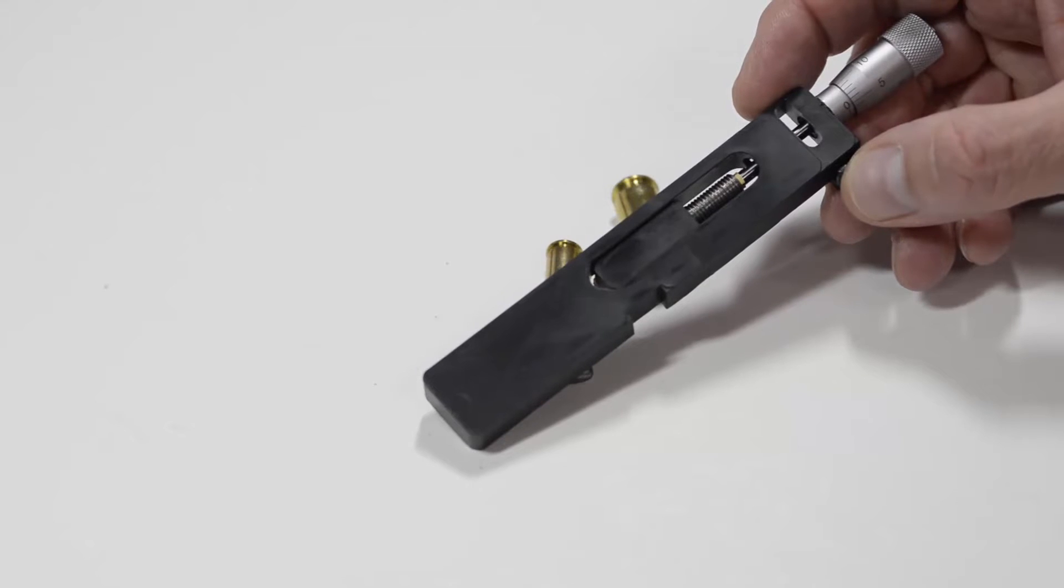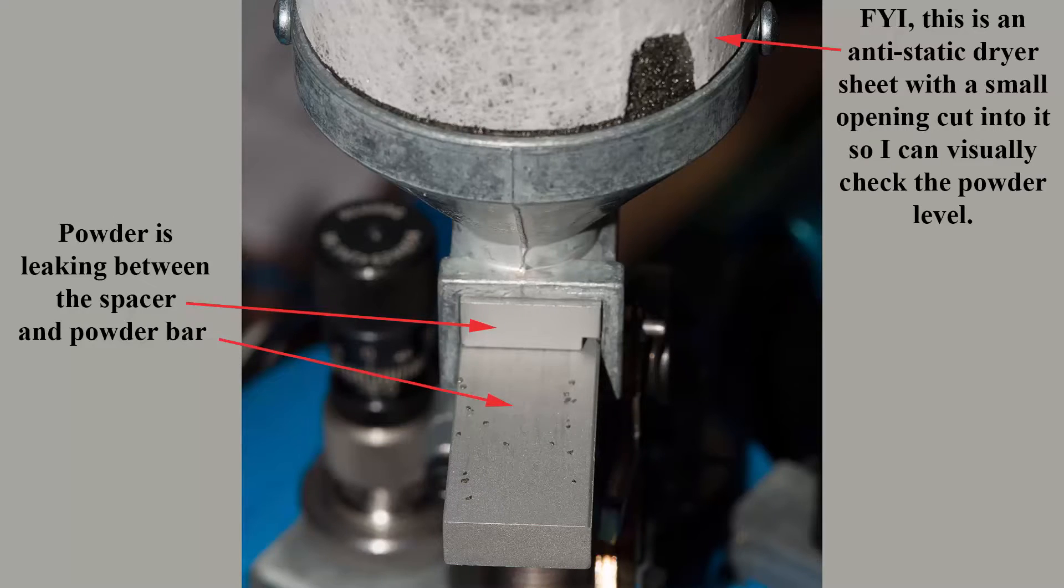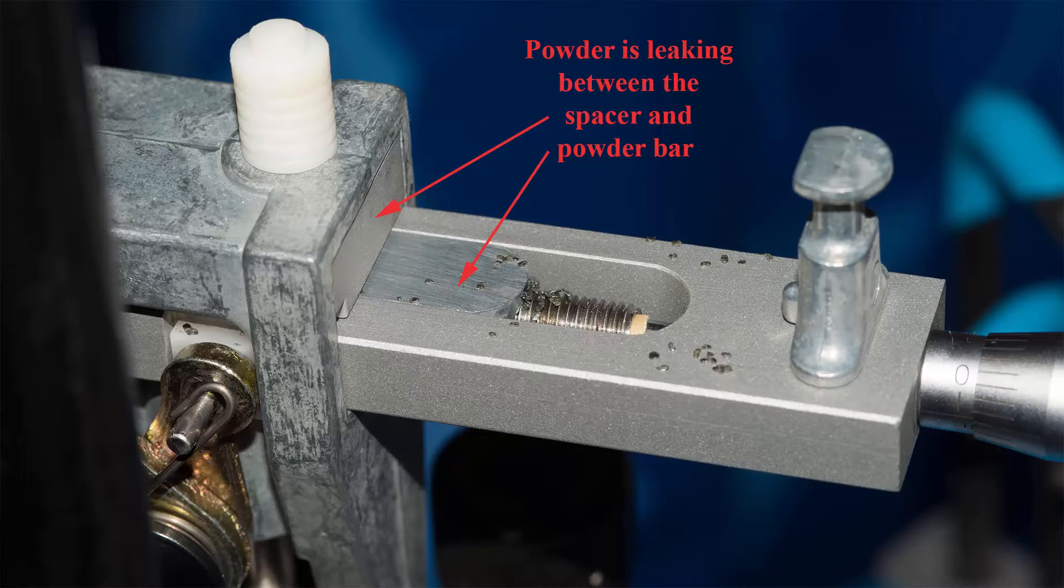Regarding powder leakage, let's take a close look at an example. As you can see in these images, powder is leaking between the spacer and powder bar. The way I solved the powder leakage problem is by calling Dillon. He sent me a new, slightly thicker spacer at no charge. The new spacer solved the problem. Therefore, I recommend contacting Dillon first to see if a different spacer can solve your issue before buying a new powder bar.